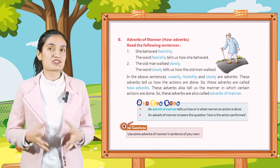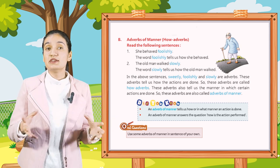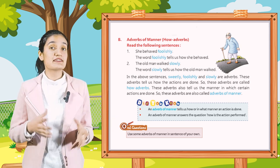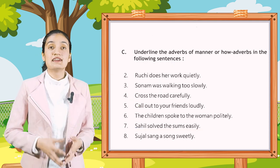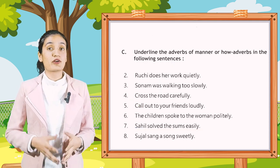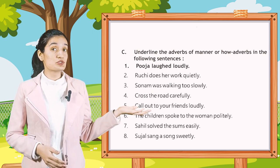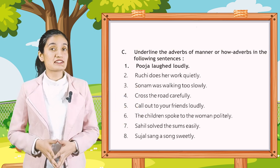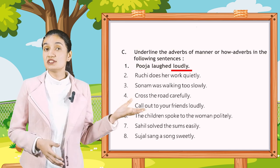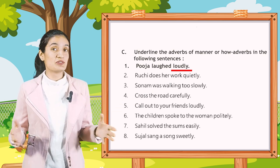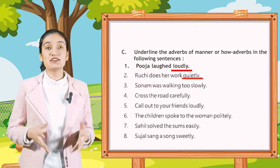Now I have oral questions for you — use some adverbs of manner in sentences of your own. Part C: Underline the adverb of manner or how adverbs in the following sentences. First: Pooja laughs loudly — you will underline 'loudly'. Second: Luchi does her work quietly — you will underline 'quietly'. Similarly, underline all the manner adverbs.